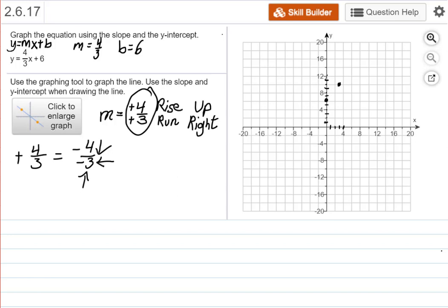Notice you go up 4 and to the right 3, and then you make your point. And then if you're graphing by hand, which I'm terrible at, you draw your line. It's not exact, but it's good enough.